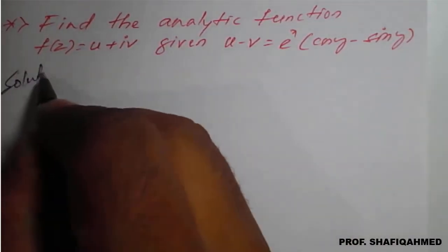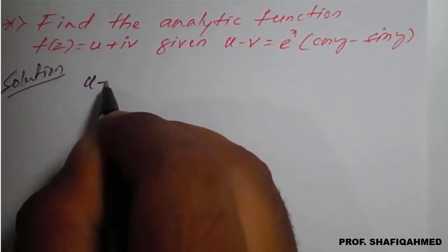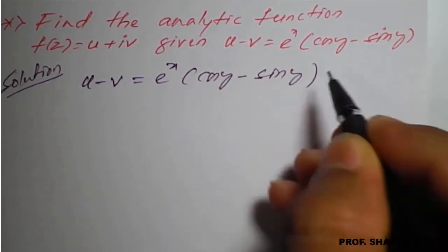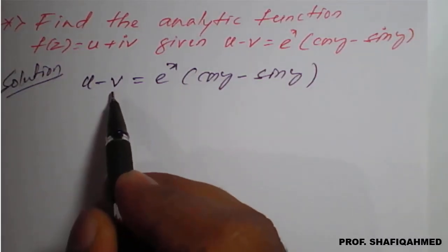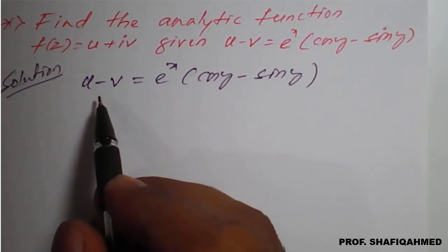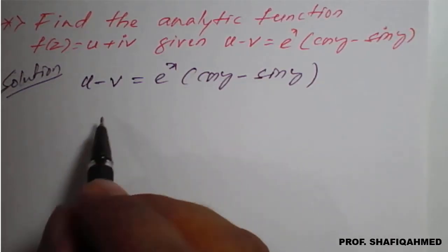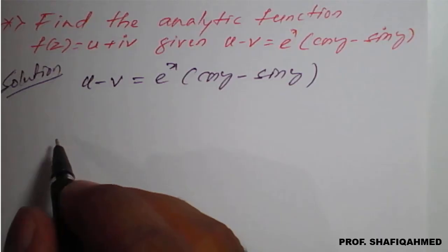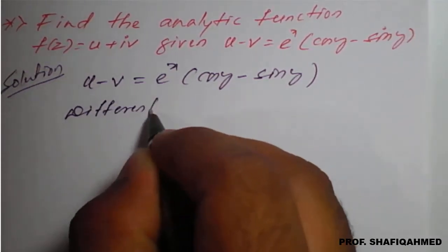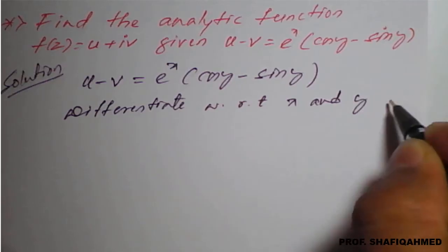Solution. Here they have given u minus v, so u minus v is equal to e raised to x into cos y minus sin y. You can observe that u is the real part and v is the imaginary part. To get an analytic function, we want either u purely or v purely. For such kind of expressions, we have to differentiate with respect to x as well as y partially.